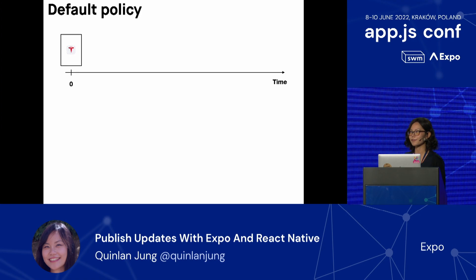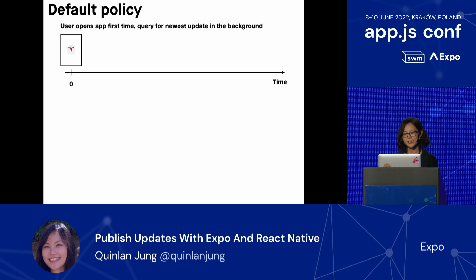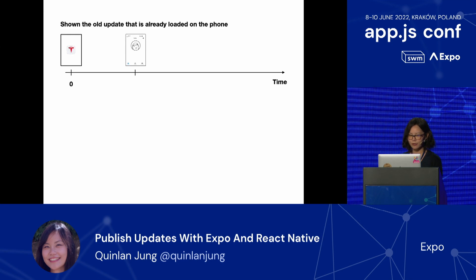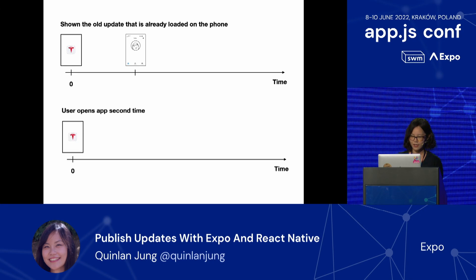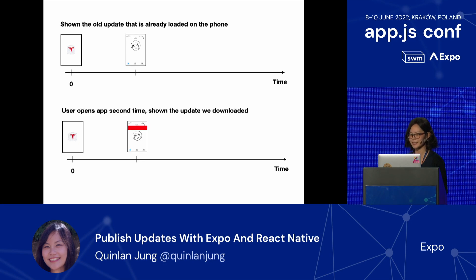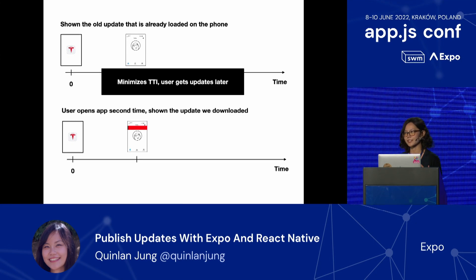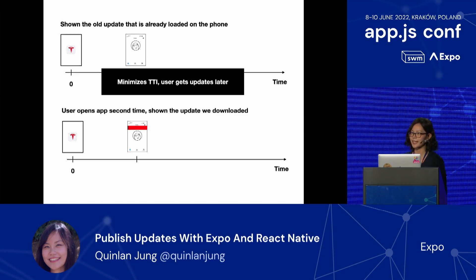By default, at time zero, when you first open an app, you see the splash screen. Right away, we will query for the newest update in the background. While that is happening, we will show the old update that is already loaded on the phone. The second time the user opens the app, they'll see the splash screen, but right away we'll load the update we previously downloaded. The upside of this policy is that it minimizes TTI, so the user doesn't have to wait long to see any experience. But the downside is that it takes a little longer for the user to actually get a new update.